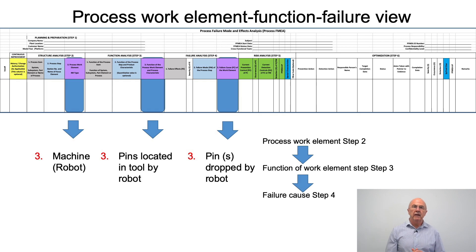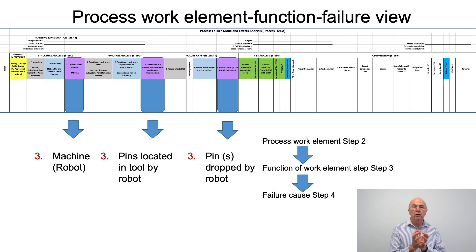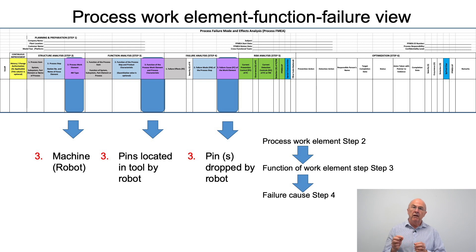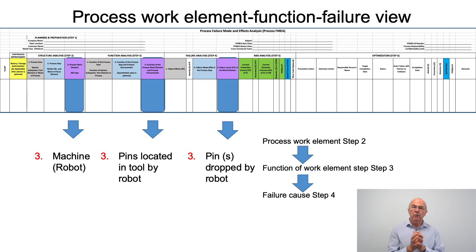The final view is looking at steps two, three and four — box number three. What is the 4M element here? It is the machine, which is the robot. What is the robot trying to do? The robot is trying to locate the required number of pins into the tool. What is the potential cause of failure? The pins could be dropped by the robot. So these line up between the process work element in step two, the function of the work element in step three, and the failure cause in step four.